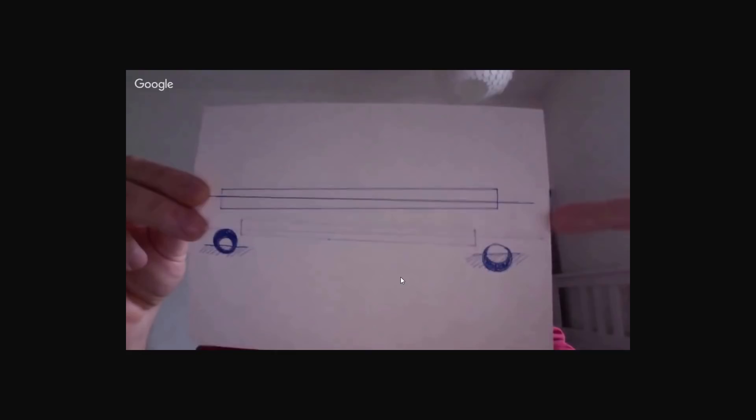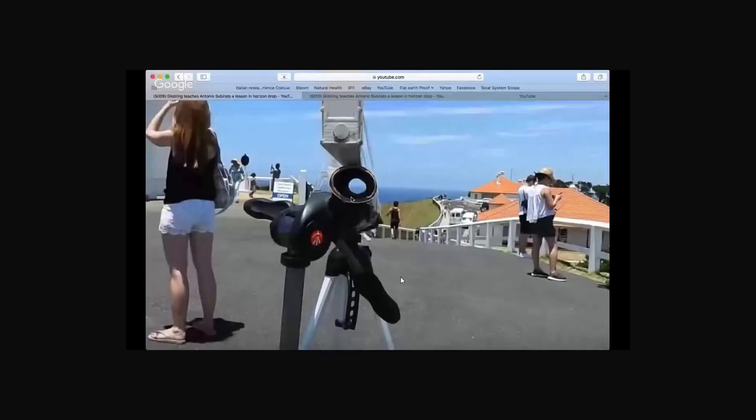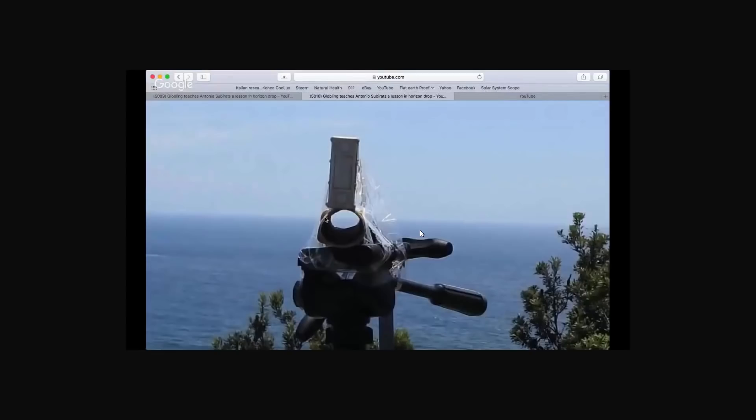They're looking south. Now you'll notice that he's cherry-picked a frame here where the horizon in the tube is a little bit above center. So he's tried to get as much in his favor as he can by cherry-picking that particular frame, and then of course the other one is an obvious cherry-pick.